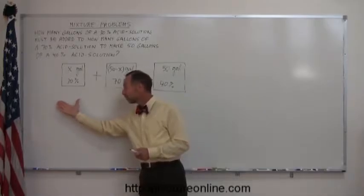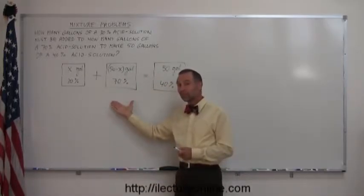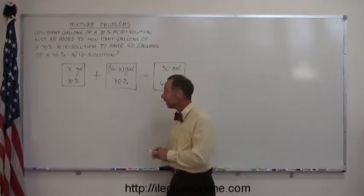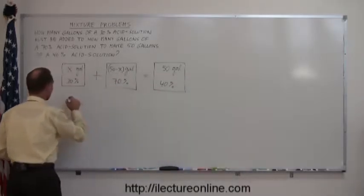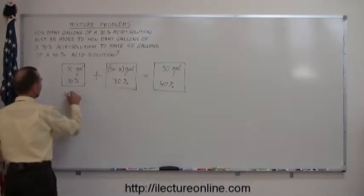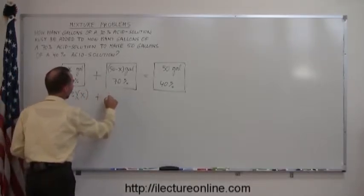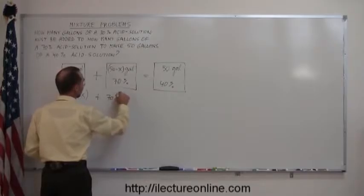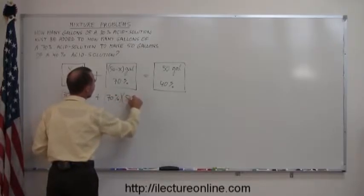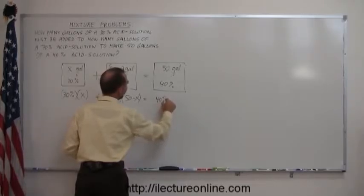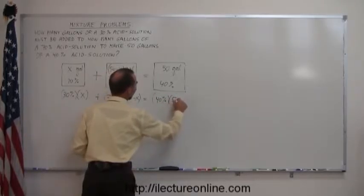And the amount of acid in this solution plus the amount of acid in this solution equals the amount of acid in this solution. So, simply put, in algebra, in algebraic terms, we write 30% times x plus 70% times 50 minus x equals 40% times 50.